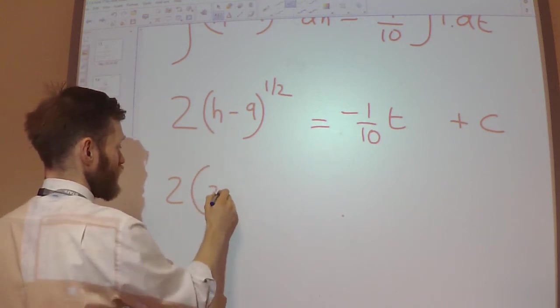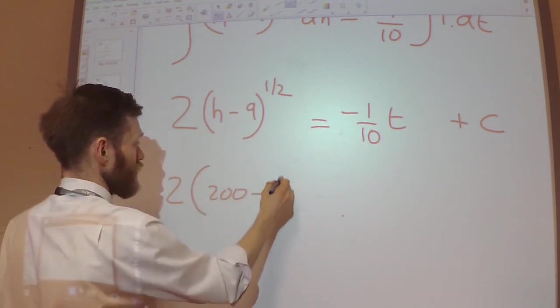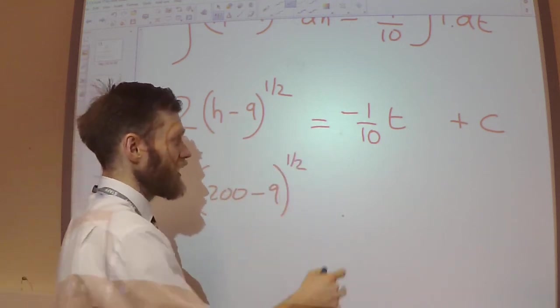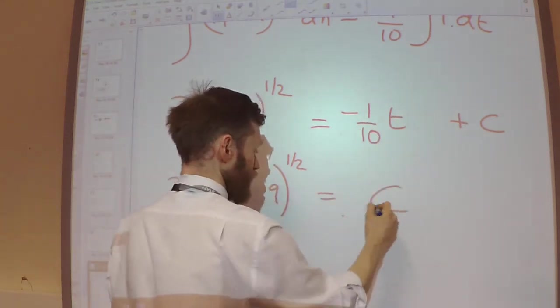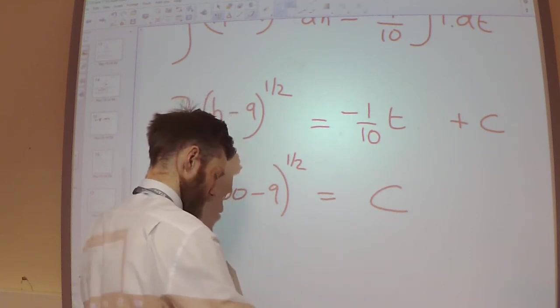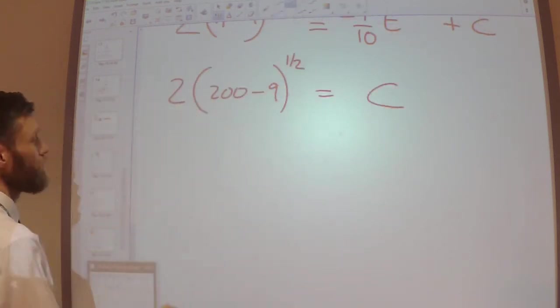So, height is 200 when the leaking started, so T equals 0. So, on the right-hand side, all I have is my constant.